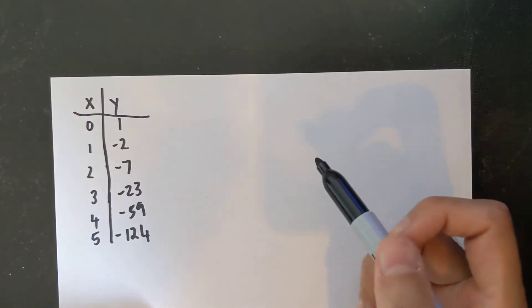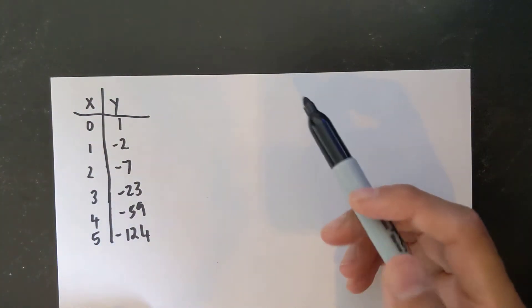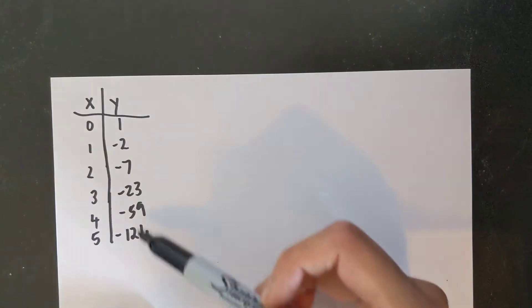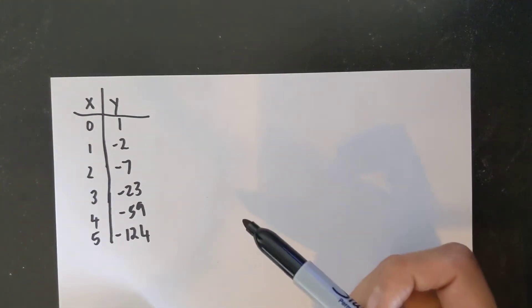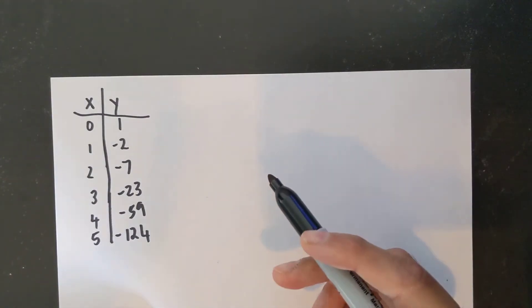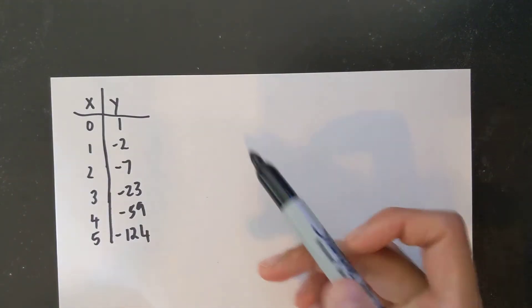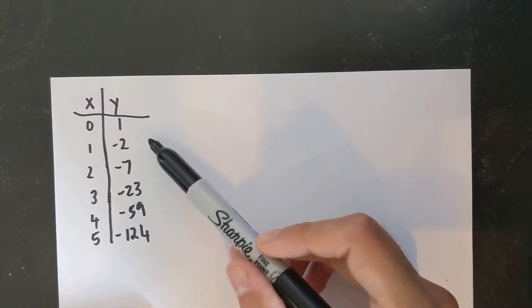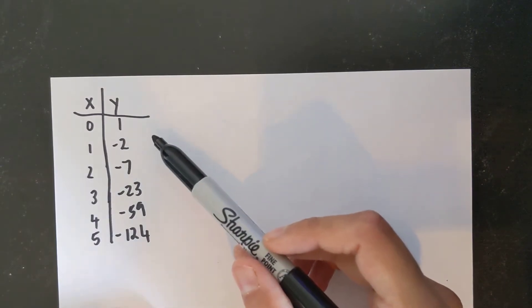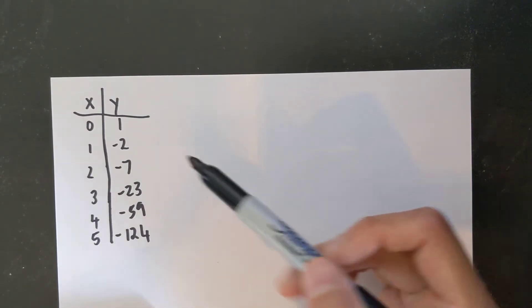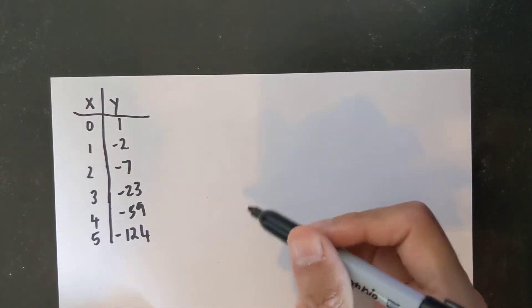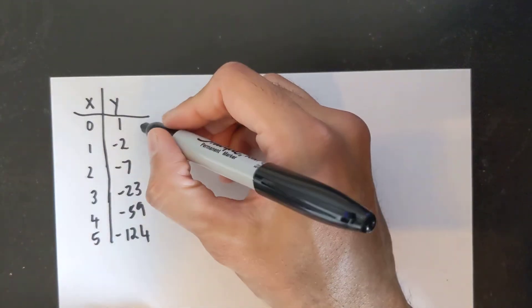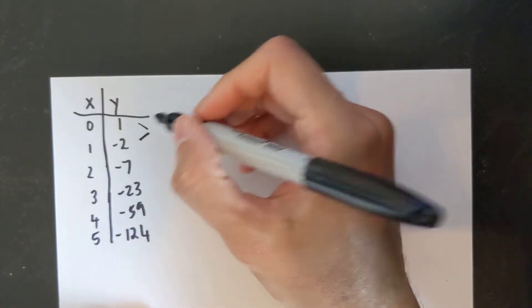In this video we are going to learn how to find the equation of a polynomial equation from a table of values. The first thing you need to do is determine what type of polynomial equation it is — if it's linear, quadratic, cubic or so on. So you want to start by doing first differences.